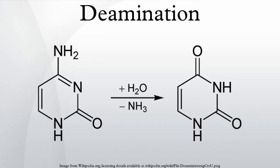Deamination is the removal of an amino group from a molecule. Enzymes that catalyze this reaction are called deaminases. In the human body, deamination takes place primarily in the liver; however, glutamate is also deaminated in the kidneys.